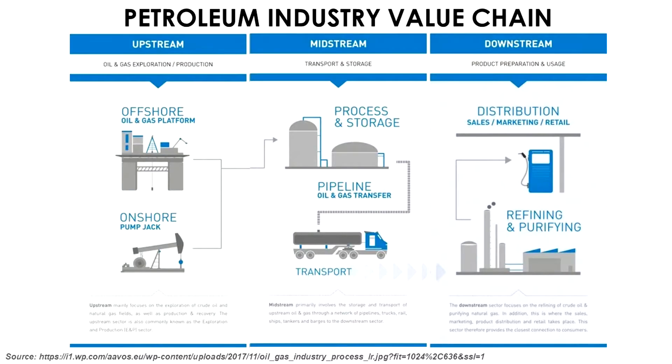Once that hydrocarbon is on the ground, it needs to be transferred to either storage or refineries. If the field is in a remote area, it can be transferred through pipelines; if accessible by road, we can use tankers; and if it is in the ocean, we use oil tankers or big ships. This portion of transporting oil from the field to the refineries is known as the midstream part of the petroleum industry.